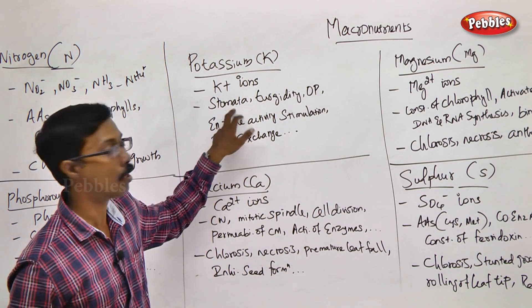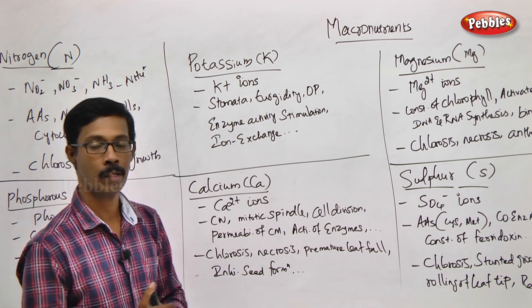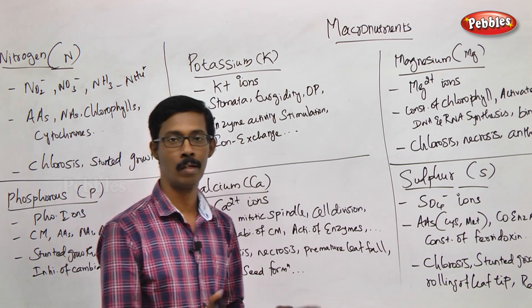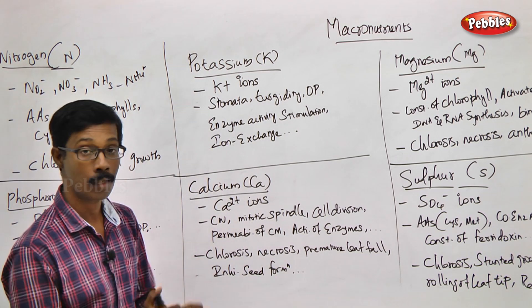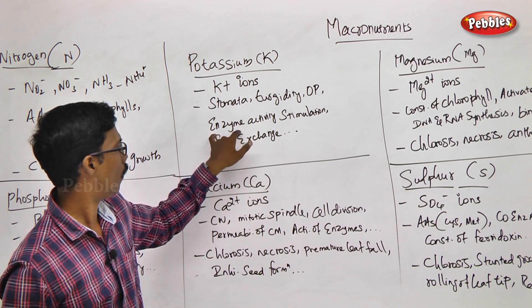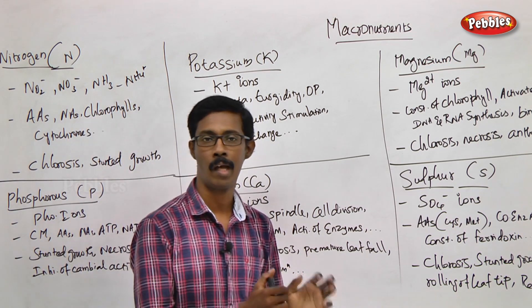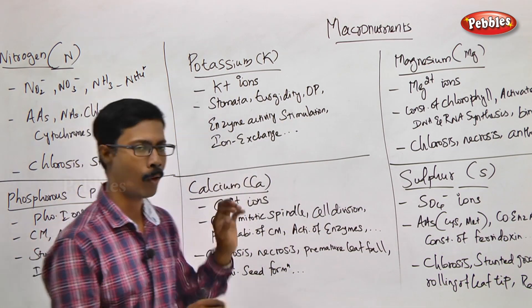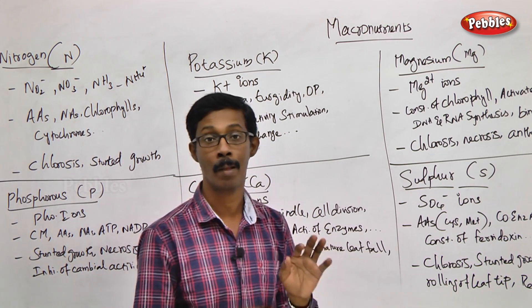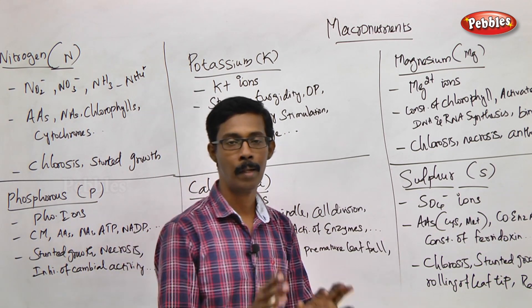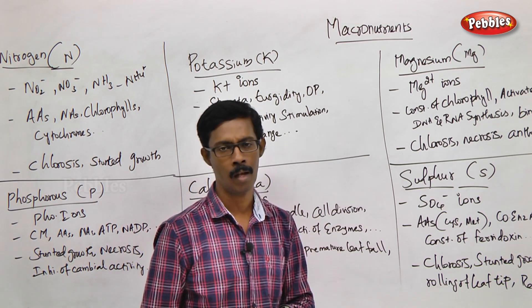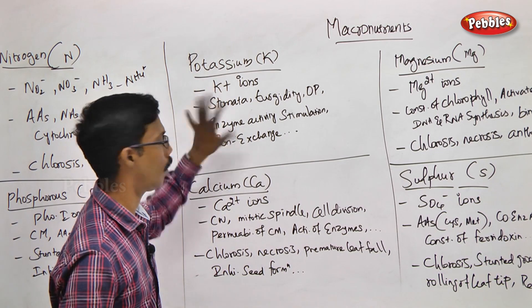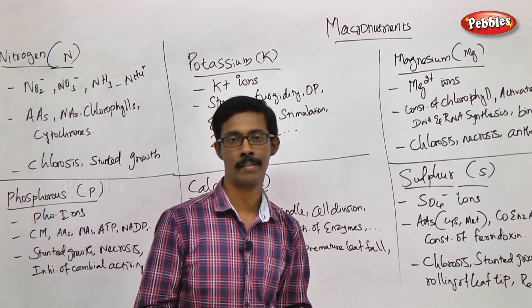The stomata open when water enters the guard cells and they expand to form the aperture. So stomata function depends on K⁺ ions. Additionally, many enzyme activities are stimulated by the presence of K⁺ ions. Potassium also maintains the anion-cation balance through ion exchange. These are the major functions of potassium.